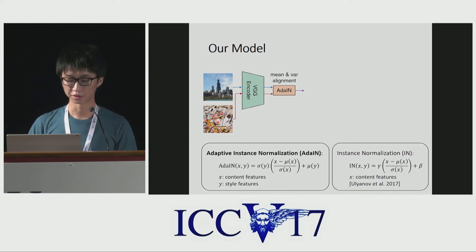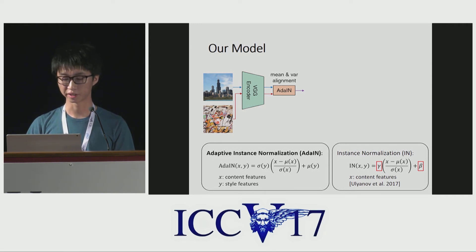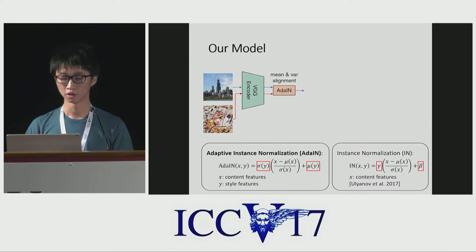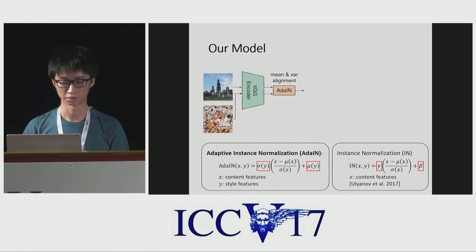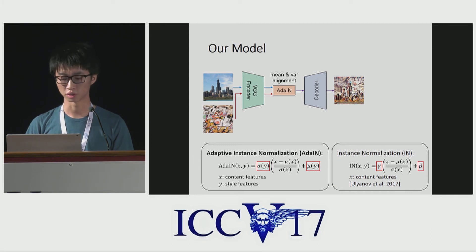AdaIN is very similar to instance normalization, which shows good performance for single style transfer. Instance normalization transforms the input to a fixed mean and variance represented as beta and gamma, and as a result it can only capture a single style. On the other hand, our AdaIN normalizes the input to the mean and variance of a given style input, therefore enabling arbitrary style transfer. Finally, a decoder is used to invert the output of AdaIN back to pixel space.